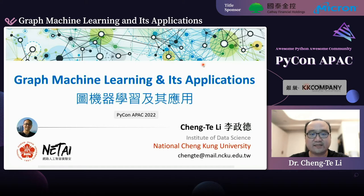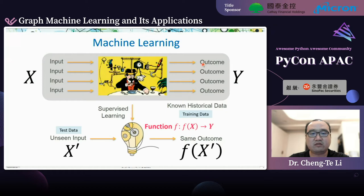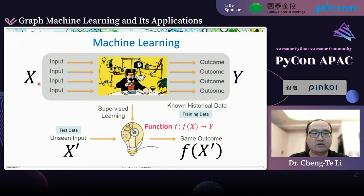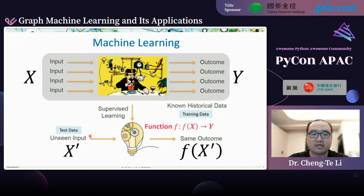I'm Dr. Chandler Lee from National Tsinggong University. First, let me use one or two slides to quickly recap what machine learning is. Machine learning, especially supervised learning, is a setting where given some observed variables or features X and prediction targets Y, we let the machine learn the mapping from X to Y. We provide training data and learn the mapping function f, then input unseen testing data to produce prediction outcomes.